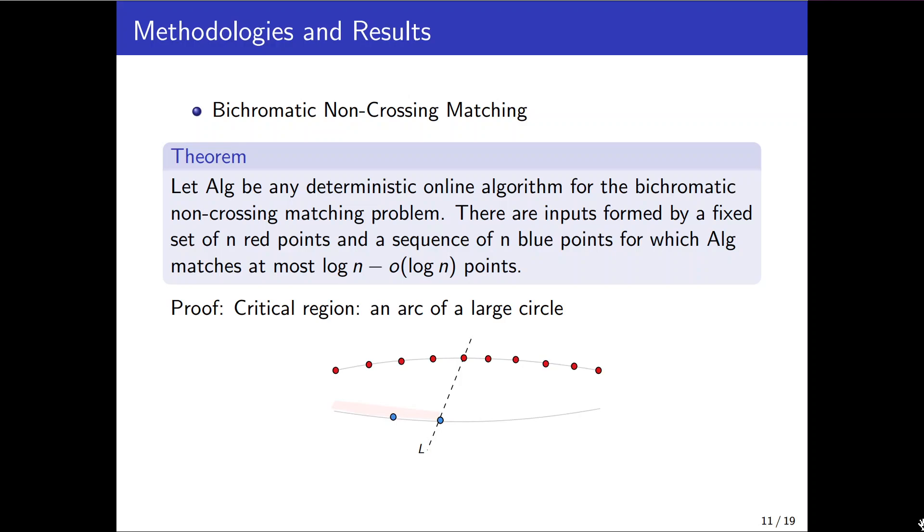Where n red points located on an arc of a large circle. And blue points are generated online on a similar arc but in the opposite side. Once two points are matched the adversary update the critical region to the red area in this figure.